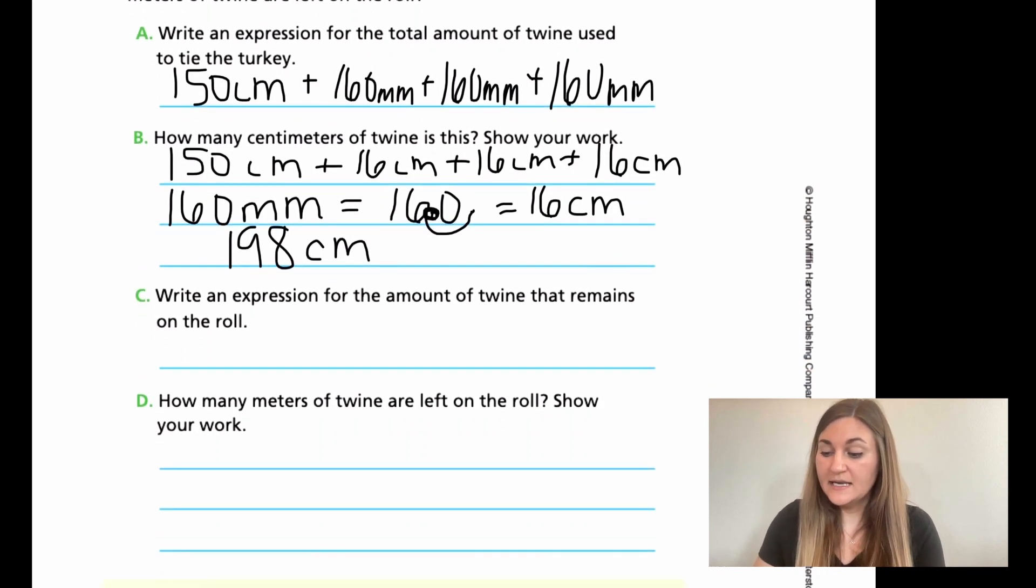For C. Now it says write an expression for the amount of twine that remains in the roll. So up above it said a new roll of twine has 10 meters. So I know that's my starting point. If I have a brand new roll, I'm starting with those 10 meters. And I just figured out how much twine I'm using. I know that it was 198 centimeters. So that's how much I'm taking away and I'm keeping them in their original units. So just 10 meters minus my 198 that I used.